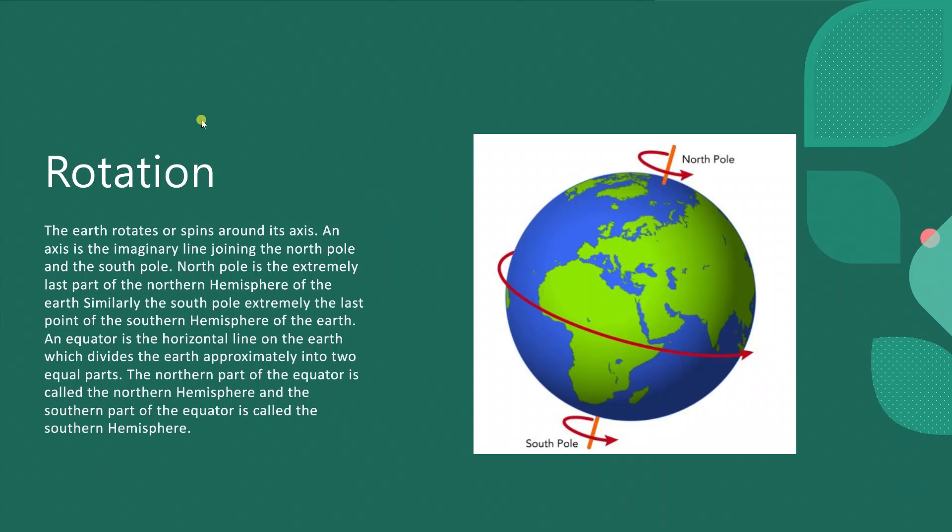Rotation: Earth rotates or spins around its axis. An axis is the imaginary line joining the North Pole and the South Pole. North Pole is the northernmost part of the northern hemisphere.